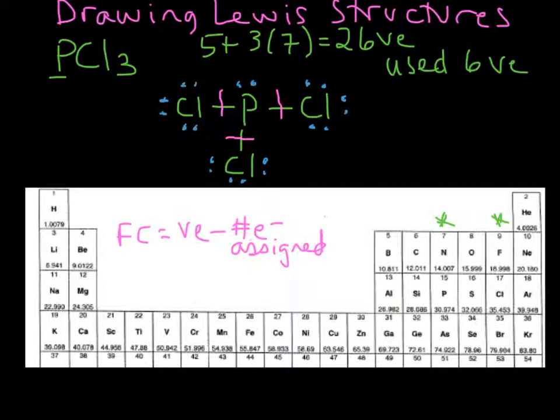For each chlorine-phosphorus bond, chlorine gets one of those electrons and phosphorus gets the other.